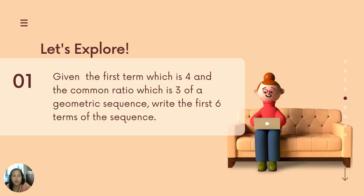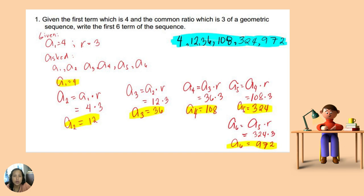Let us start. Let us explore with this given problem. Problem number one: given the first term which is four and the common ratio which is three of a geometric sequence, you are going to write the first six terms of the sequence. To find the first six terms, first you are going to identify the given and identify what is being asked. The given here is our first term a sub one is equal to four, our common ratio r is equal to three, and you are asked to find the first six terms from a sub one to a sub six.